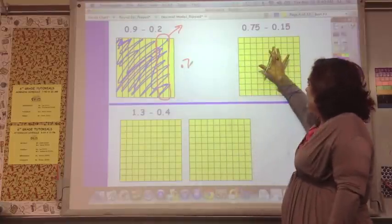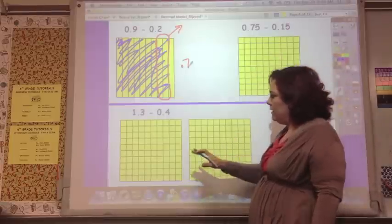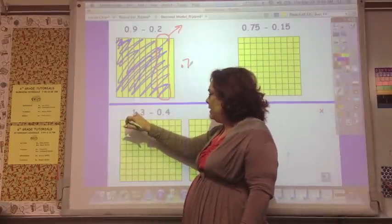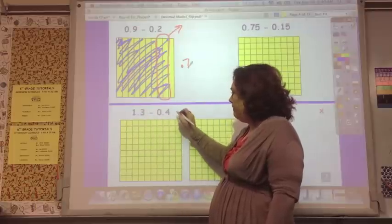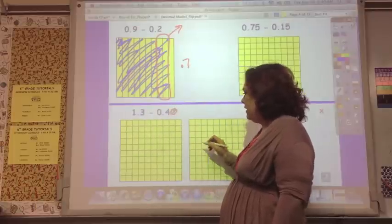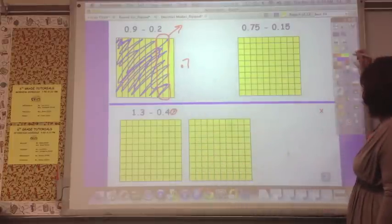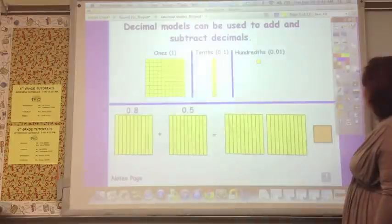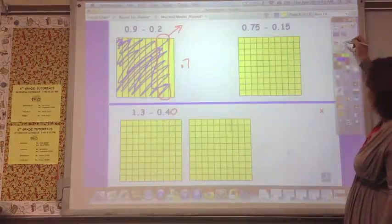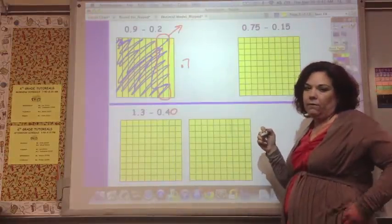So you have to show it. You have to show that there's nine tenths and two tenths goes away. And you can do the same thing with this grid. And with this one, remember it's one and thirty hundredths, take away forty hundredths. So you'll show that on here. So go ahead and do that and then come back whenever you're done.